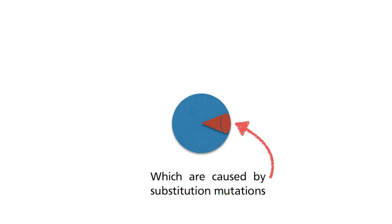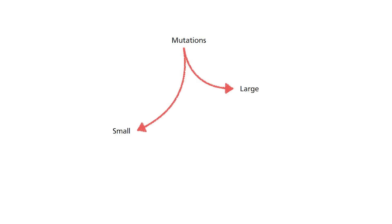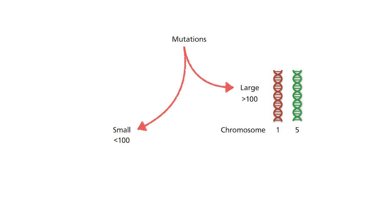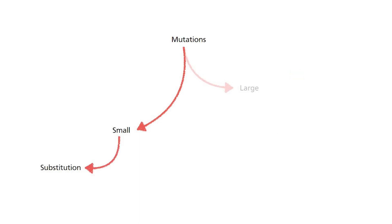However, there are other types of mutations. Mutations are generally grouped into small and large mutations. Small mutations involve a few nucleotides within the exon sequences, typically less than 100 of them. Large mutations, in contrast, involve more than 100 nucleotides — in fact, they can involve parts or even the entire chromosome, which we term chromosomal aberrations. Within the small group of mutations, besides substitution mutations, there are also insertions and deletion mutations.